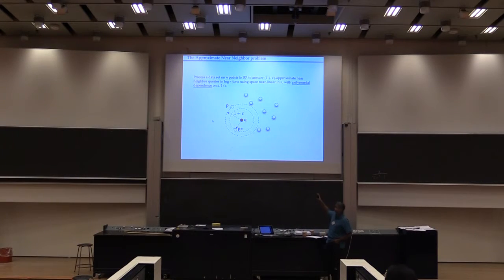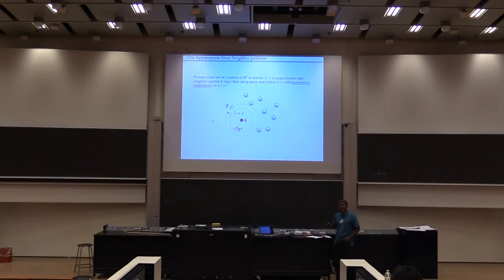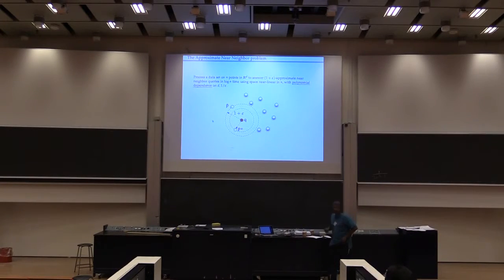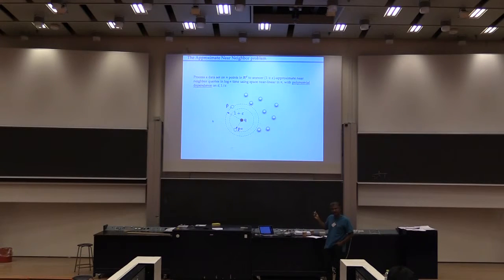We do have results for low dimensions — which is code for we don't care what the runtime dependence on d is; it can be exponential. In the literature that's called low dimensions. You can do nearest neighbor search in low dimensions fairly well. But the final piece of the puzzle is we're going to show lower bounds, so I must give you a model.